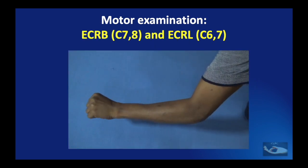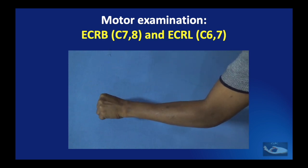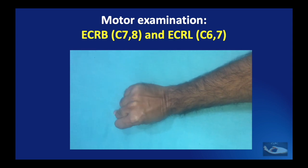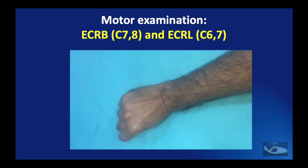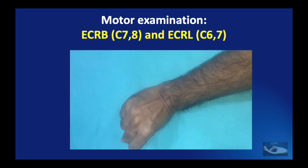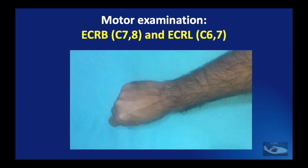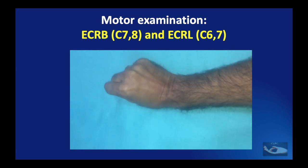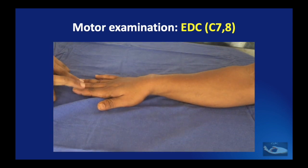To test the extensor carpi radialis brevis and extensor carpi radialis longus, the patient is asked to extend the wrist, and this extension must occur in line with the forearm. If there is deviation to the radial side, it could mean that the extensor carpi ulnaris is not acting, or that the extensor carpi radialis brevis — the more central extensor of the wrist — is not acting. If the wrist deviates to the ulnar side during extension, it means the extensor carpi radialis longus and brevis are not acting.